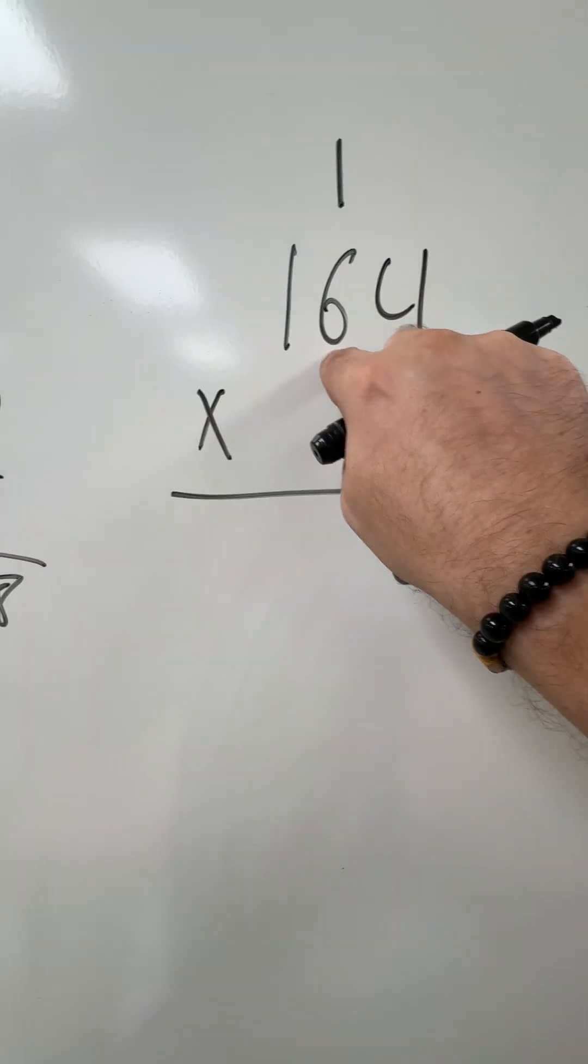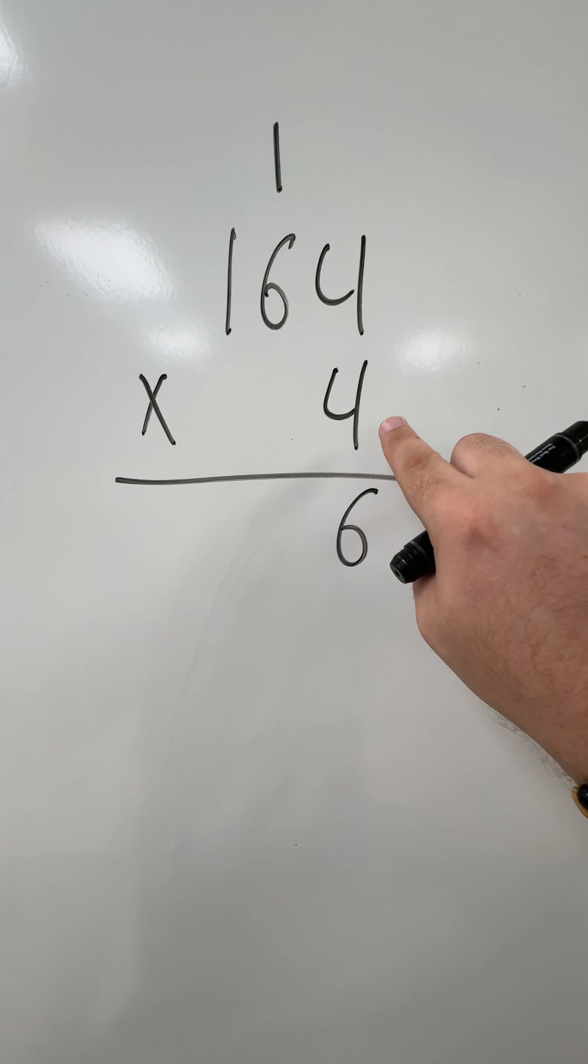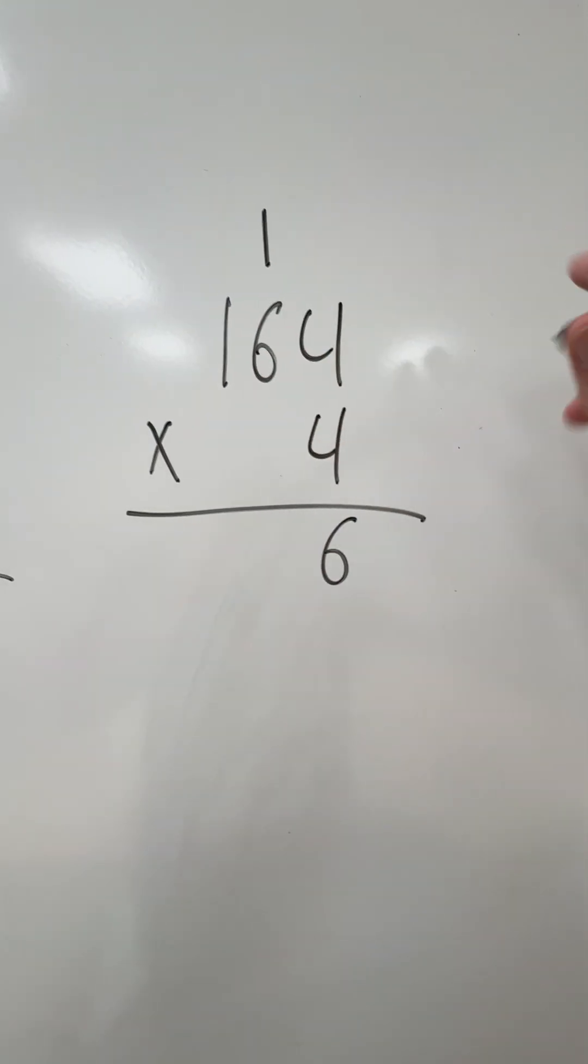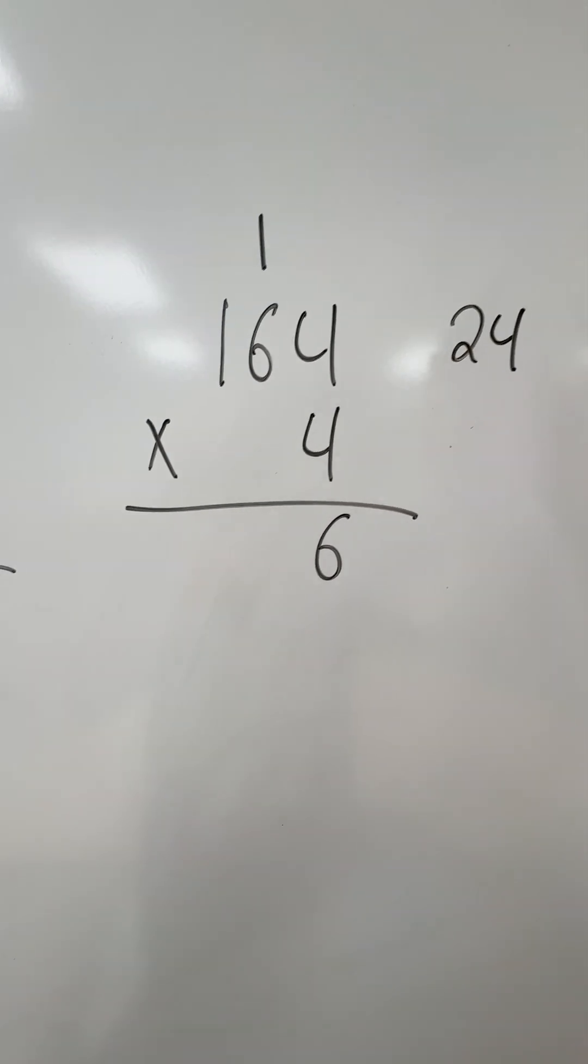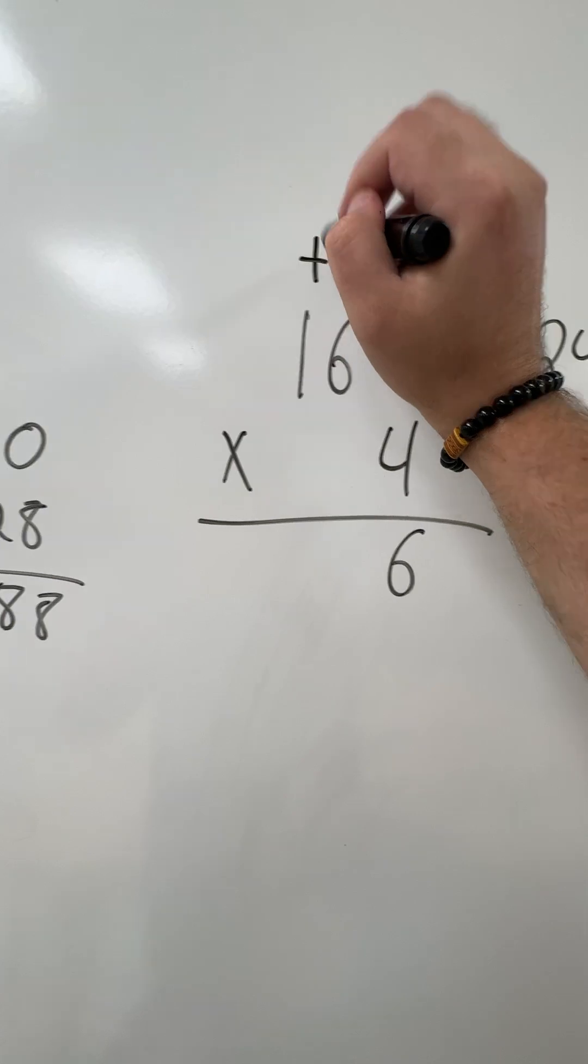Now I have 4 times 6. Don't worry about the 1 yet. I have 4 times 6. That does equal 24, but this number up here, I have to add the 1.